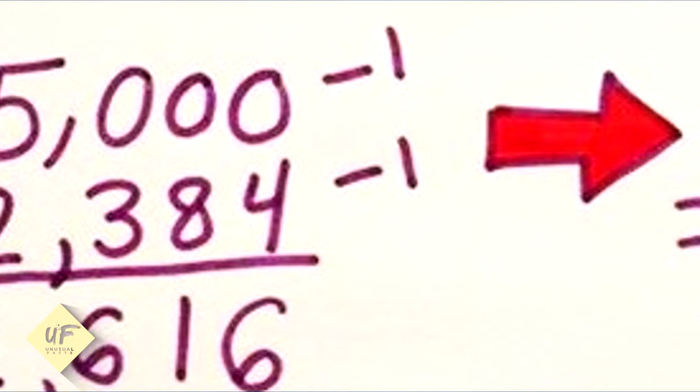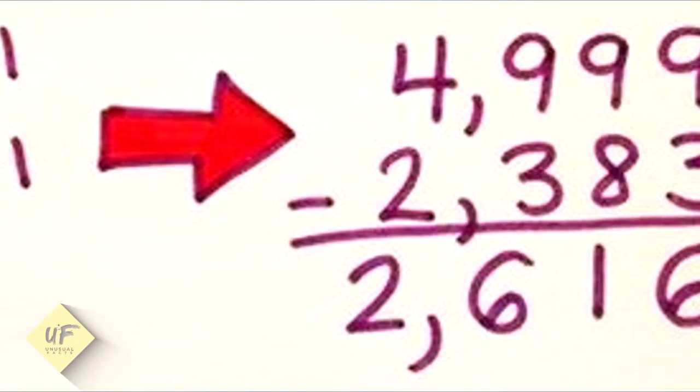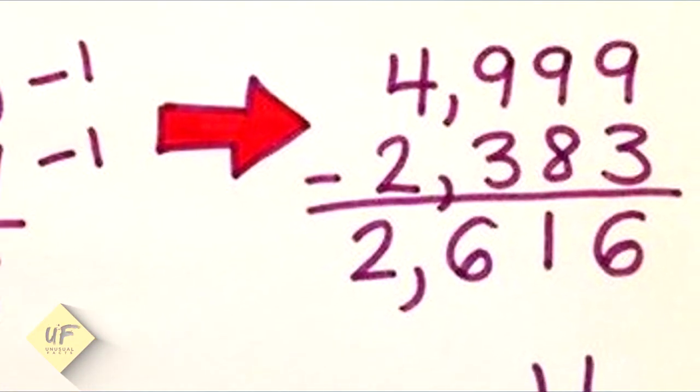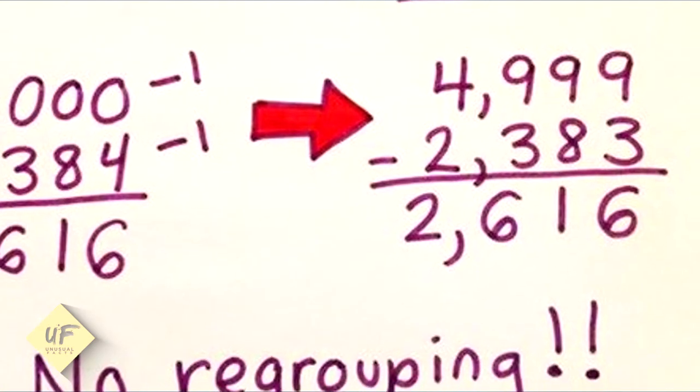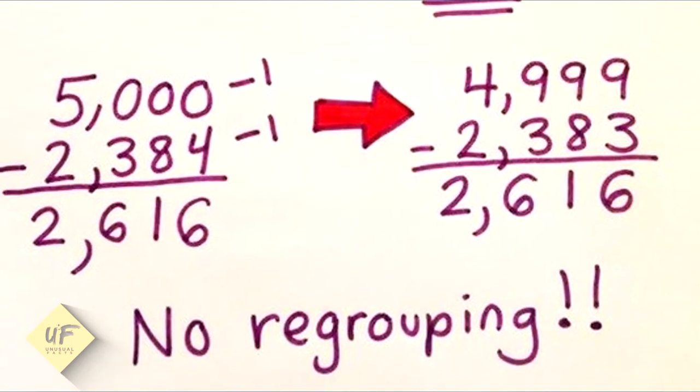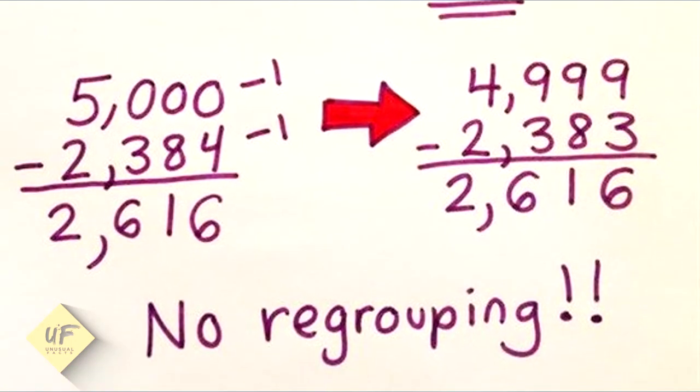So instead of 5,000 you have 4,999, and instead of 2,384 you have 2,383. Then you do your subtraction without any regrouping. And voila, a nifty trick to avoid regrouping in subtraction.